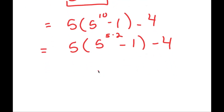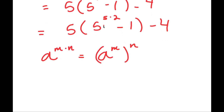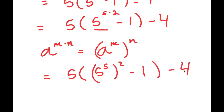Now another property of exponents to remember is that if you have something in the form a to the power of m times n, this is equal to a to the power of m, to the power of n. So 5 to the power of 5 times 2 I can rewrite as 5 to the power of 5, to the power of 2. And then we have this minus 1, minus 4.